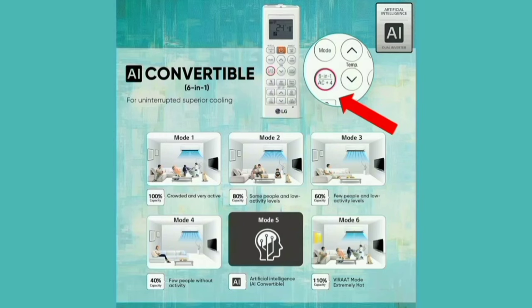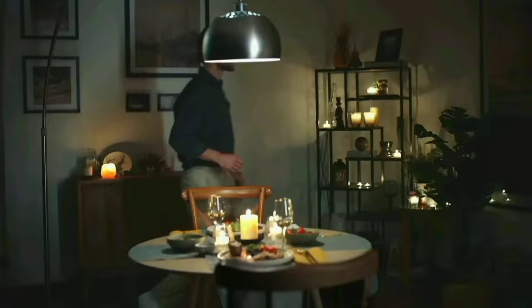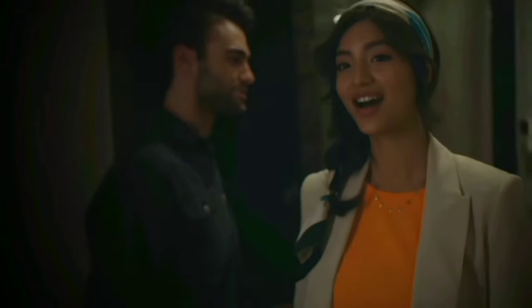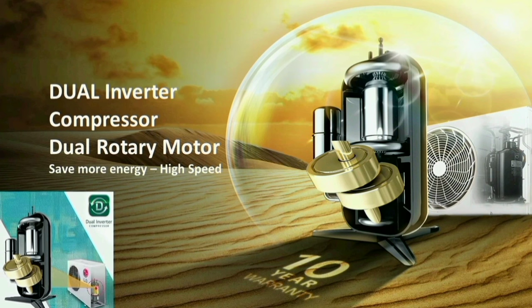The next important feature is 6-in-1 Convertible. When you press the AC remote button, you can switch the AC between different capacity modes, from 40% up to 100%, so you can adjust the power level depending on your room needs.